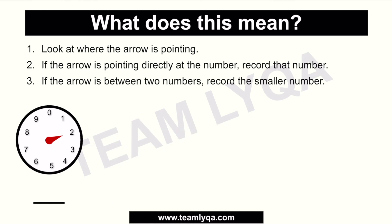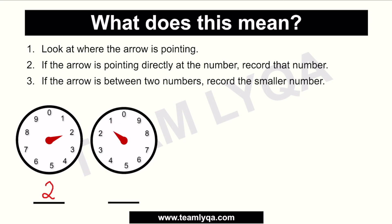Let's start with the first dial. Here, the arrow is pointing directly at two, so that's the digit we use — two. On the second dial, the arrow is in the middle between one and two. The rule again is that if it's between two numbers, record the smaller one, because it hasn't reached two yet. So we always round down. The smaller number between one and two is one, so we record one.